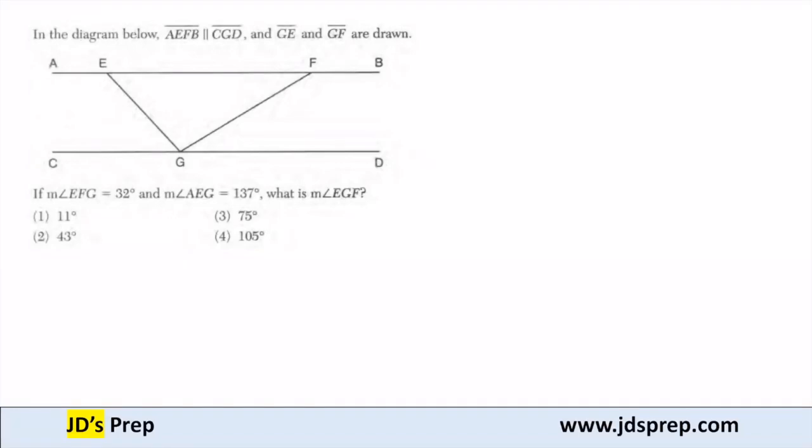Hello, welcome to JD's Prep. In this example, we're looking at the diagram below, where AEFB is parallel to CGD, and GE and GF are also drawn.